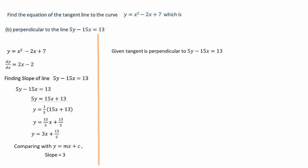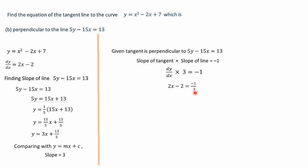Since the tangent is perpendicular to the line 5y − 15x = 13, the product of their slopes equals −1. So dy/dx × 3 = −1, meaning (2x − 2) × 3 = −1, thus 2x − 2 = −1/3. Solving: 2x = −1/3 + 2 = 5/3, so x = 5/6.